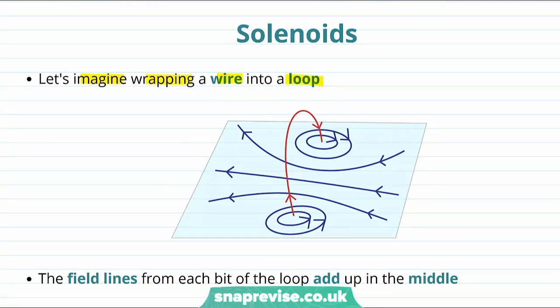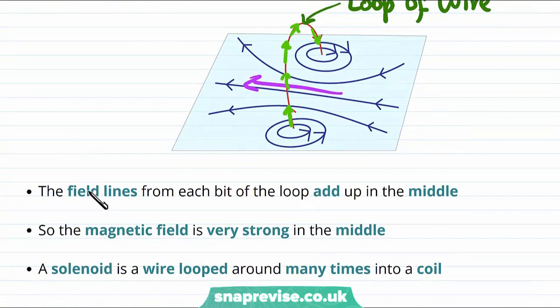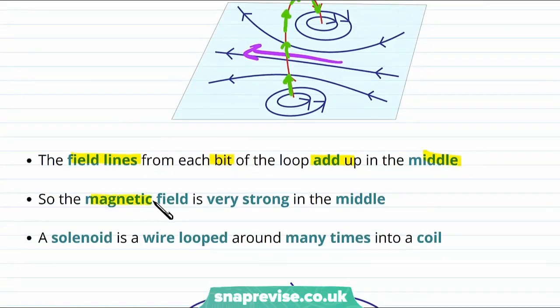But let's imagine wrapping that wire into a loop. So here is our loop of wire which is carrying a current. And let's draw on which way round the current is going round this loop. Now it turns out that if you take your right hand and use the right hand rule by pointing your thumb along the current at each point along the loop, then each part of the loop creates a magnetic field that points in this direction in the middle. In other words it turns out that the field lines from each bit of the loop add up in the middle. And as a result of this the magnetic field in the middle of the loop is very strong.